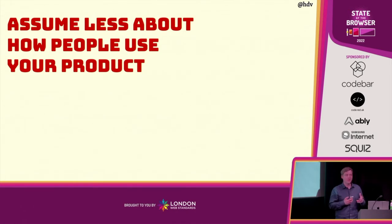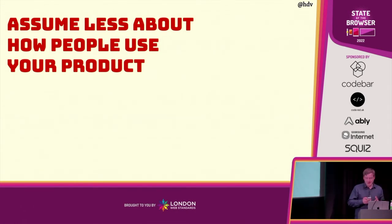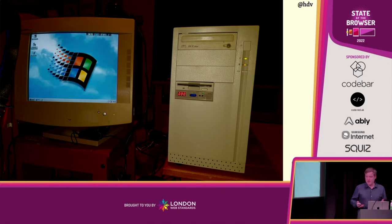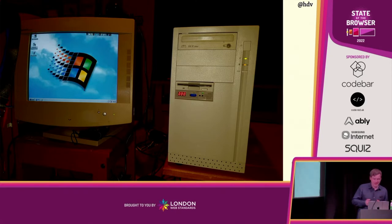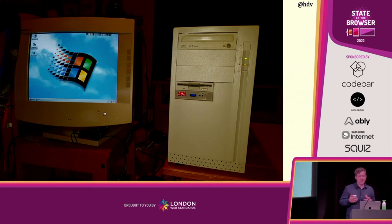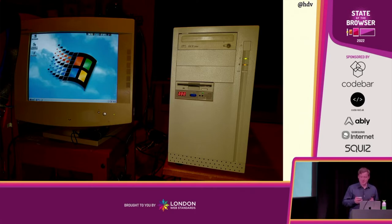One strategy for doing accessibility is to try and assume less about how people use your product. That is a very powerful way to think about web development in general. We have a lot of assumptions in web development. There was a time where we thought websites were 800 by 600 pixels — you'd get the PSD file at exactly that size. That was an assumption. It was also the time where we thought everyone could use Internet Explorer, and when we did stuff in Geocities.